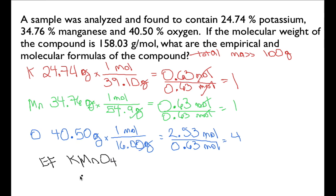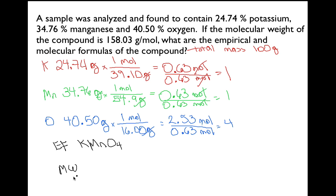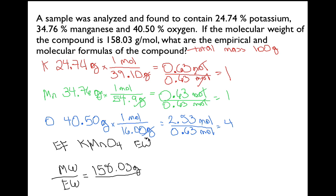Now in order to get the molecular formula, we have to compare the molecular weight to the empirical formula weight. We were given that the molecular weight is 158.03 grams per mole. We calculate the empirical formula weight by adding up the molar masses from the periodic table — one potassium, one manganese, and four oxygens — and we find that the empirical formula weight is also 158.03 grams per mole.